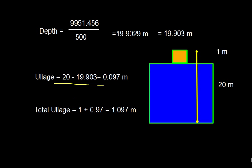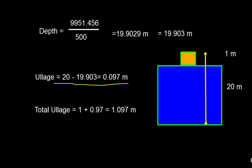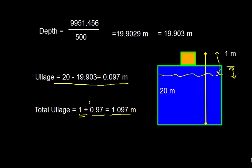Now let us calculate LH. The rectangular tank height is 20 meters and oil is loaded up to 19.903 meters, so the empty space in the rectangular portion is 20 minus 19.903 = 0.097 meters. Total LH is measured from the trunkway down to the oil level: 1 meter plus 0.097 meter equals 1.097 meters.